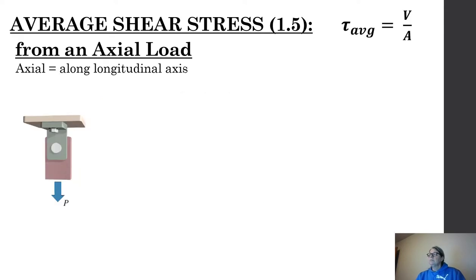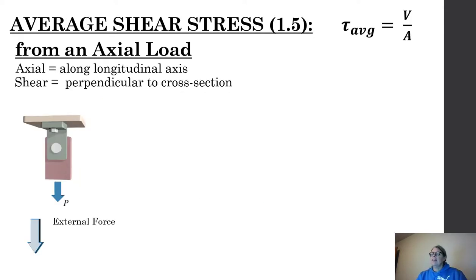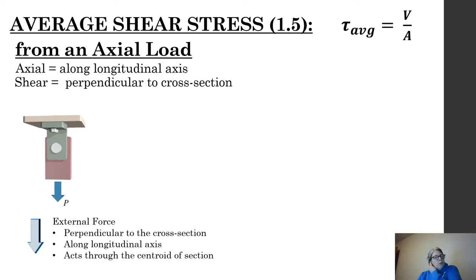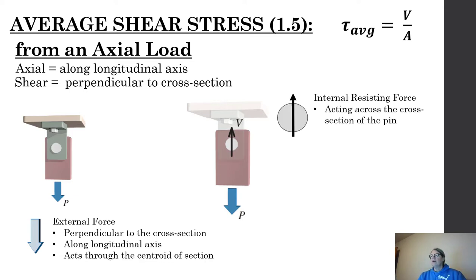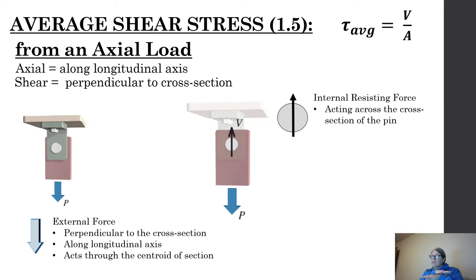Going back to these slides: looking at the external force, it's perpendicular to the cross section, along the longitudinal axis, acts through the centroid — it's an axial load. We looked at P over A (or N over A) yesterday. Now we're looking at the bolted connection. As that force travels up through the connection, it has to cross that bolted area, and we don't want that bolt to shear — to cut in half like slicing bread.